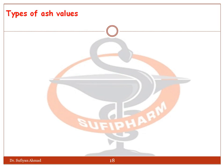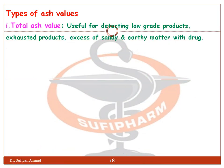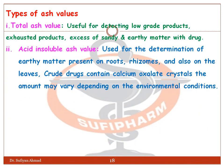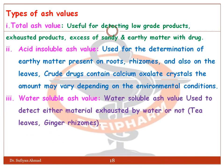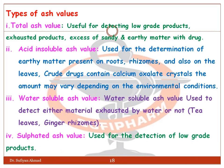Types of ash values include: Total ash value, which is useful for detecting low-grade products, exhausted products, and excess of sandy and earthy matter with the drug. Acid-insoluble ash is used for determination of earthy matter present on roots, rhizomes, and leaves; crude drugs containing calcium oxalate crystals may vary depending on environmental conditions. Water-soluble ash value is used to detect whether material has been exhausted by water — for example in tea leaves and ginger rhizome. Sulfated ash is used for the detection of low-grade products.